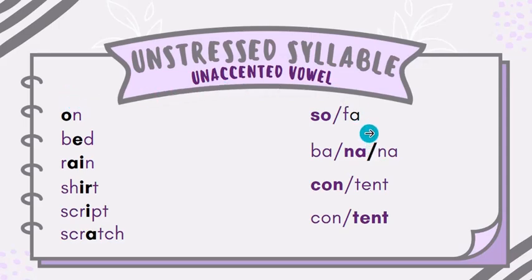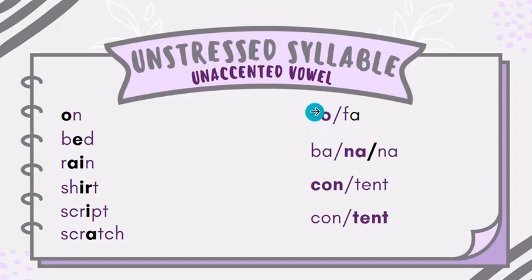However, if you look at multi-syllabic words — for example, the word sofa — here O is saying its long sound because it is in the open syllable position, but the other vowel, A, is neither saying its long nor its short sound. Instead it's saying 'uh' — so, fa. So when you have a multi-syllabic or disyllabic word, you have one syllable that is stressed, and in the stressed syllable the vowels say their complete sound, no matter long or short. In the unstressed syllable, the vowel just shrinks to schwa.